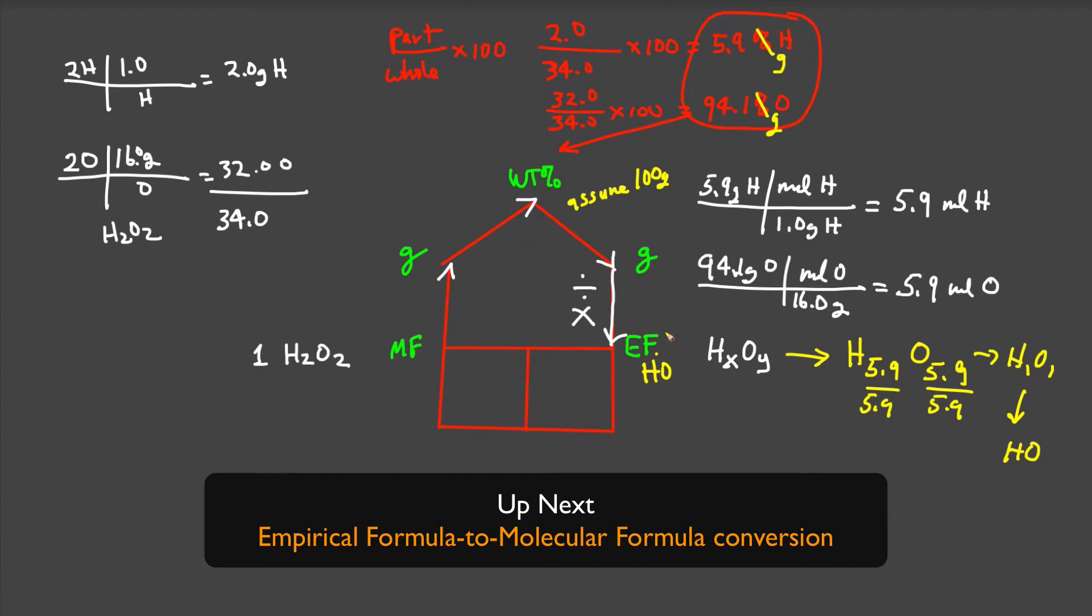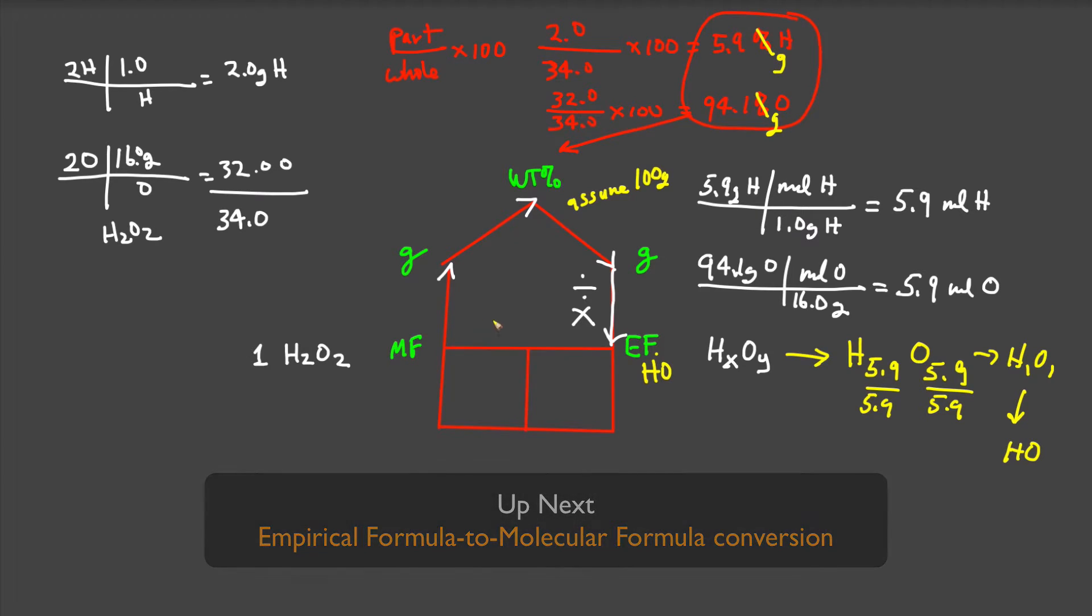Next, we want to answer the third type of question: how do we convert an empirical formula to the molecular formula? To do that, at least one other piece of information needs to be known. We do not know the number of repeating units or the molecular formula - we essentially have one equation and two unknowns, which is unsolvable.